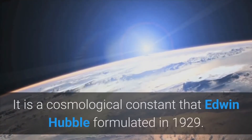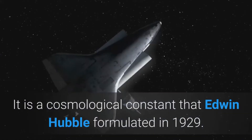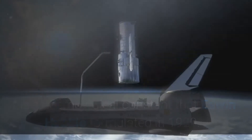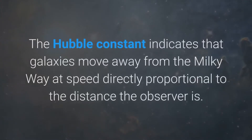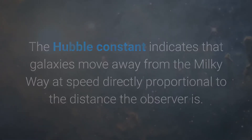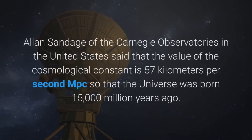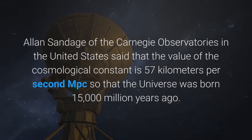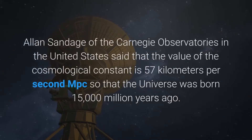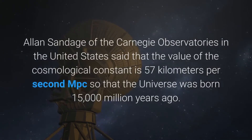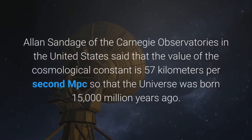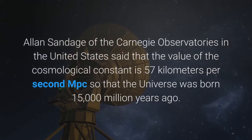The Hubble constant indicates that galaxies move away from the Milky Way at a speed directly proportional to the distance the observer is. Allan Sandage of the Carnegie Observatories in the United States said that the value of the cosmological constant is 57 kilometers per second per Mpc, so that the universe was born 15,000 million years ago.